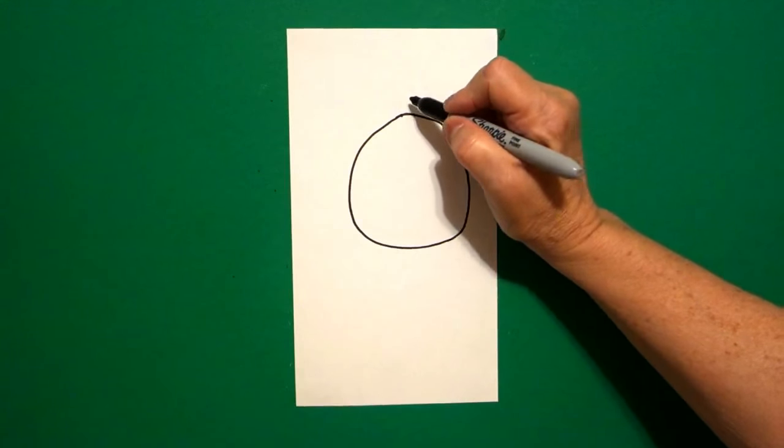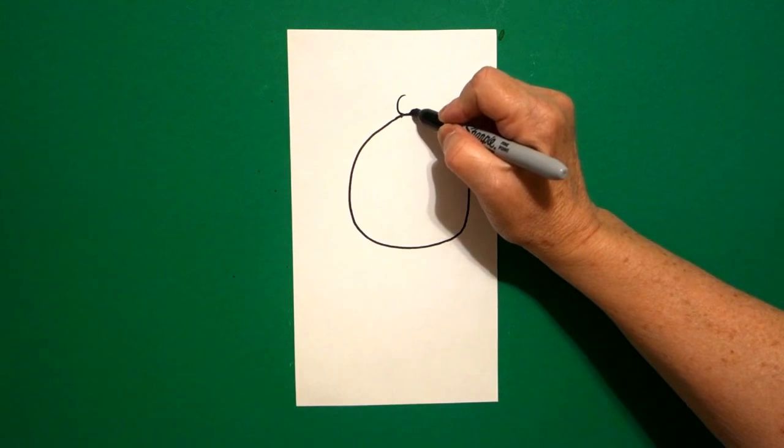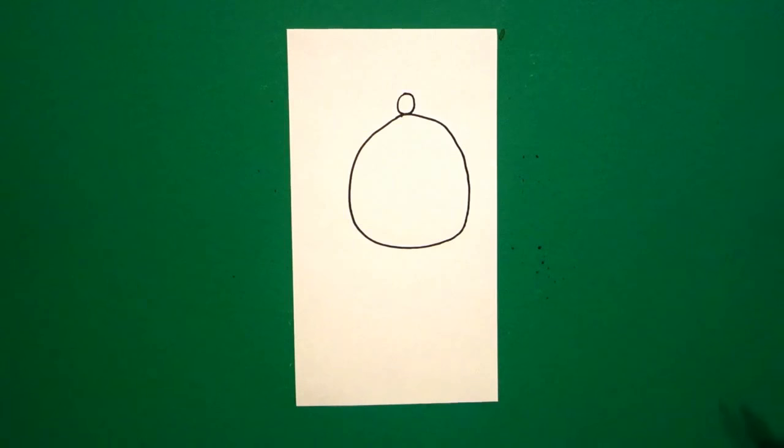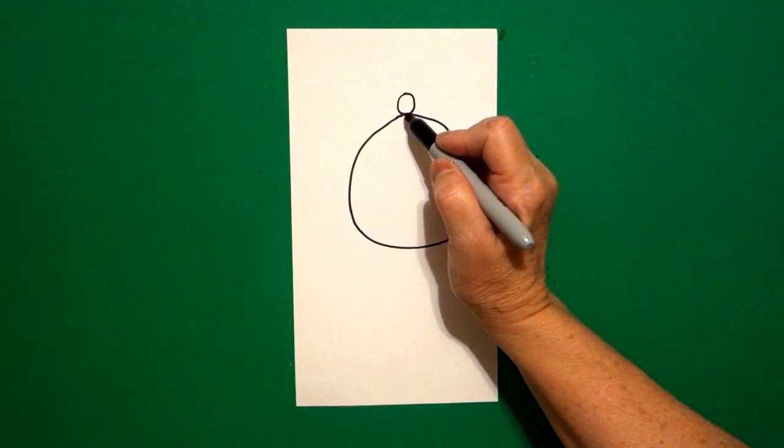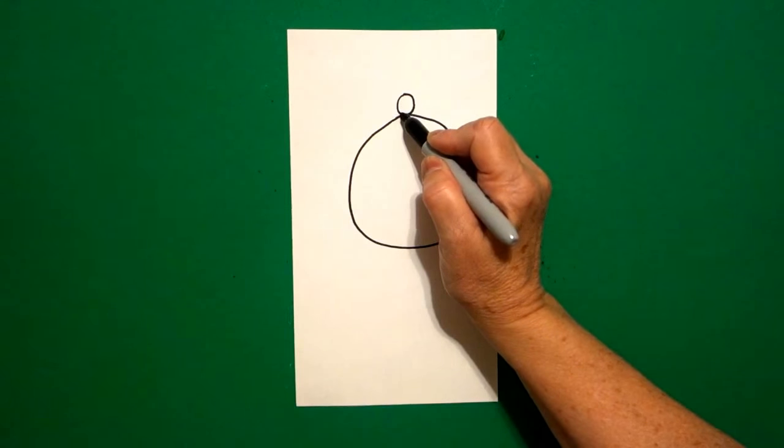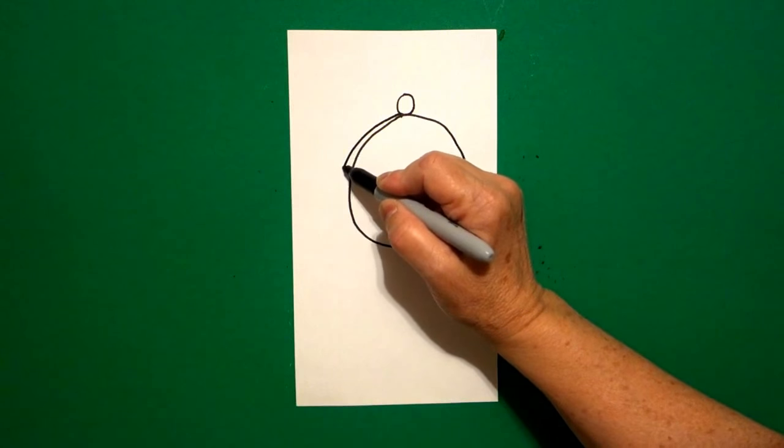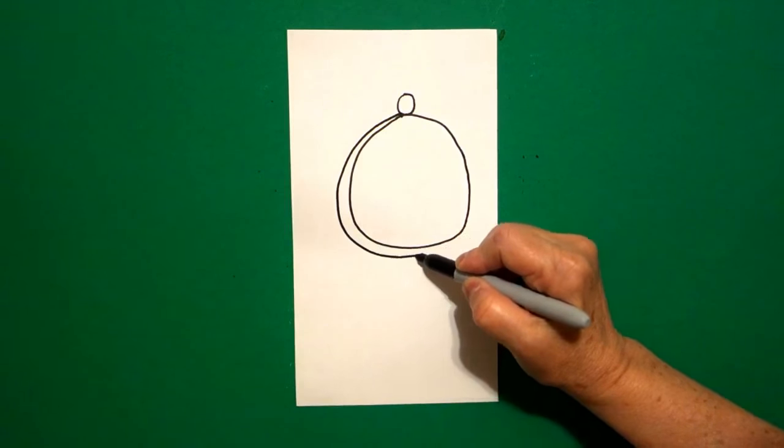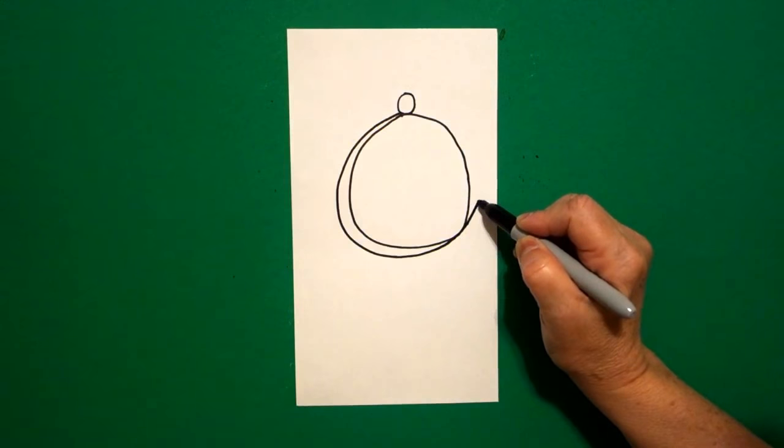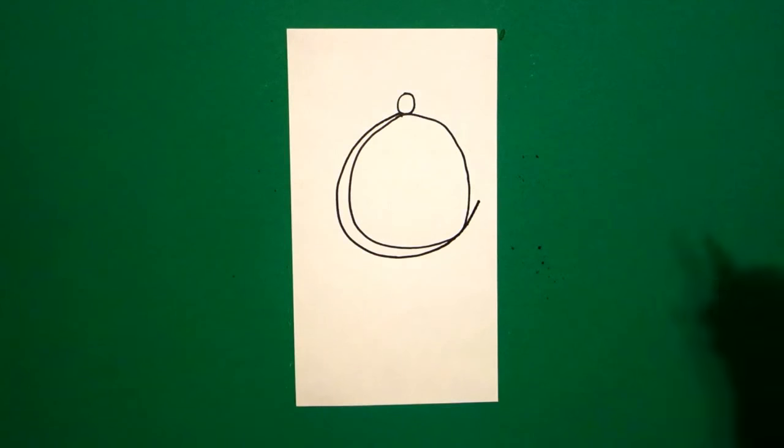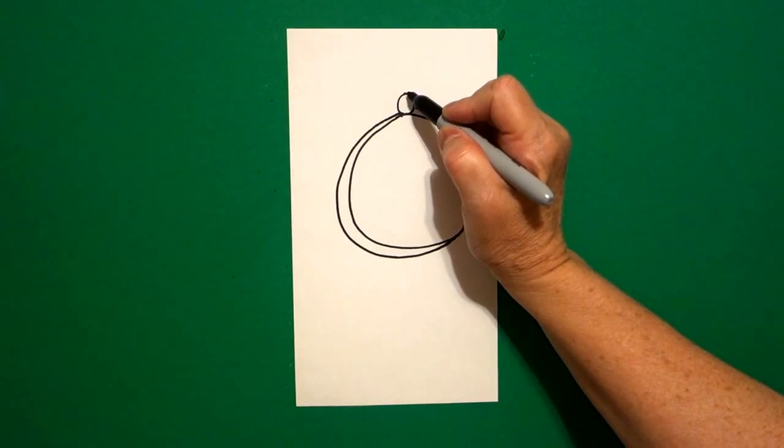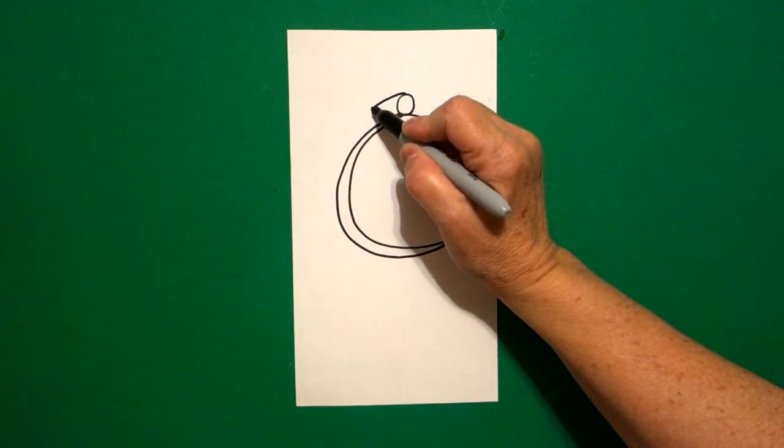Right where that first dot is, I'm going to put a little baby circle. Starting at the bottom, right here where the baby circle is, I'm going to draw a big curve line down, up, and leave that floating. Come up to the top of the baby circle and I'm going to mimic that line again. Curve line down,